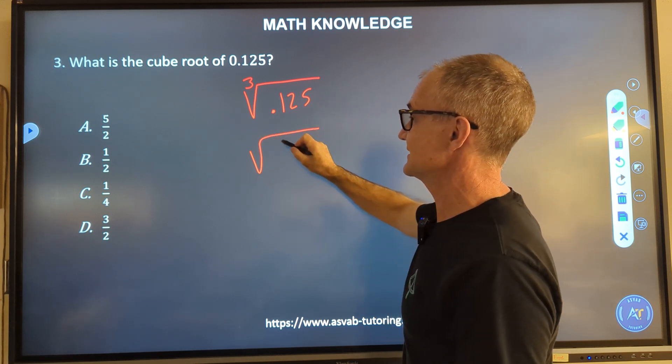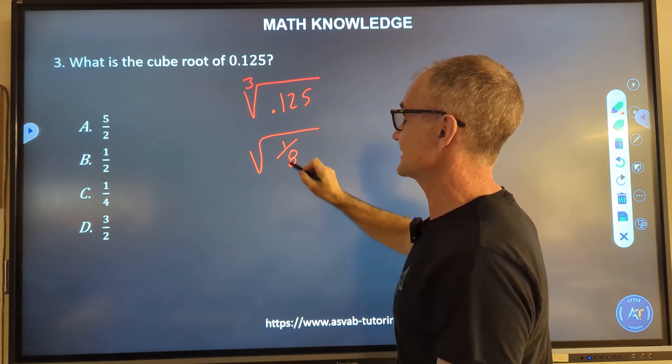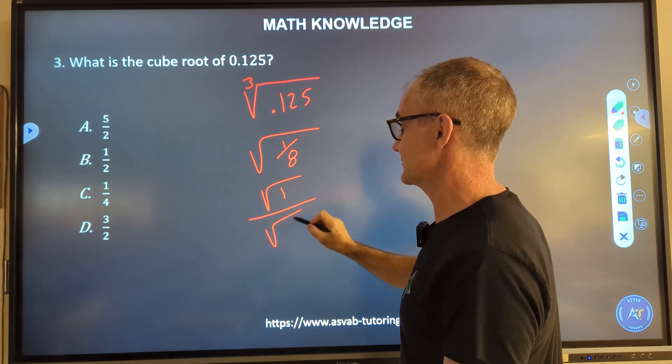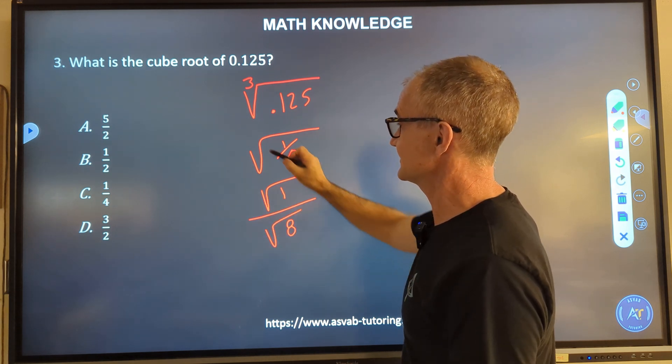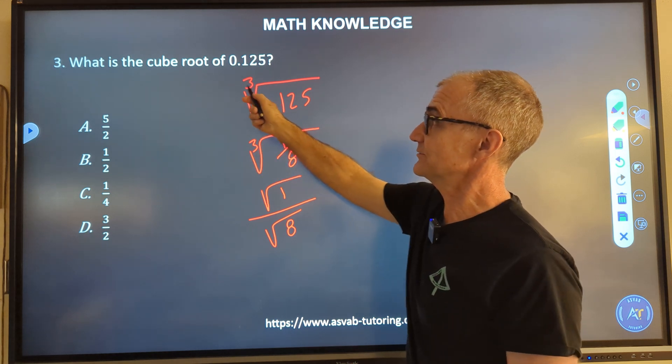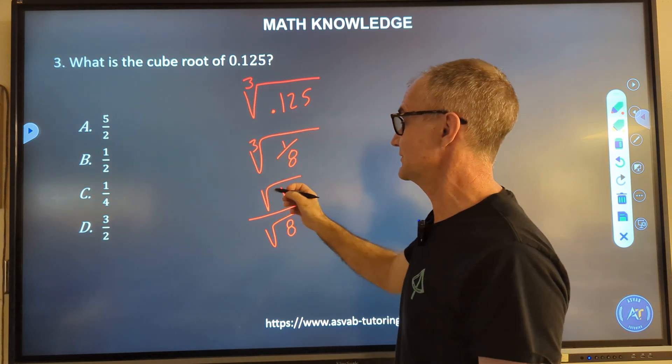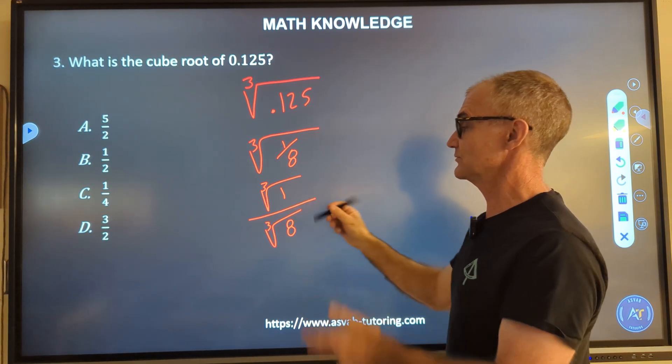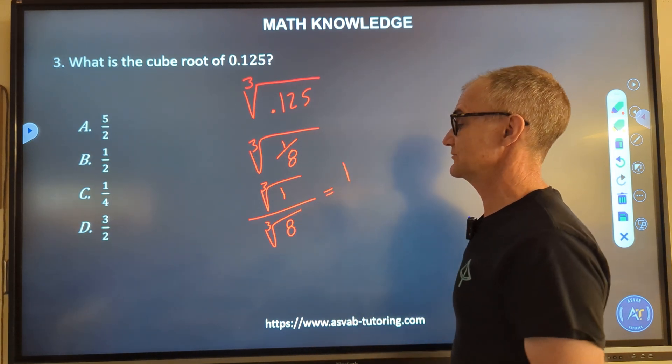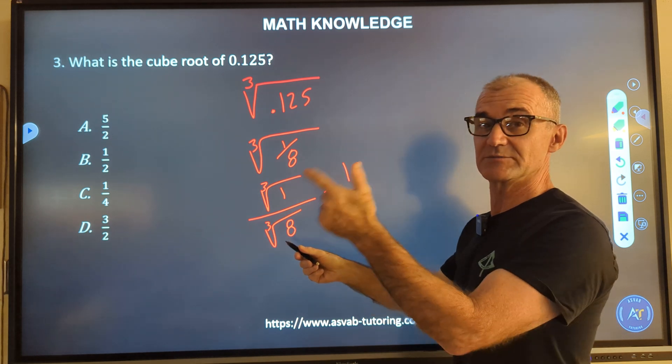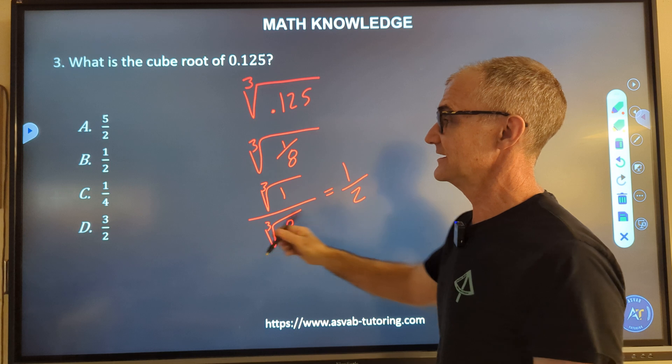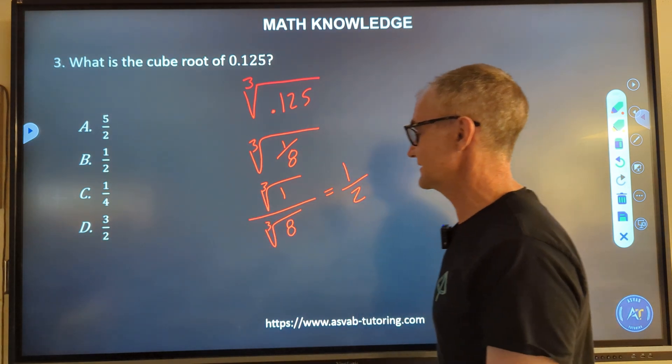I look at my answers. They're all fractional. If you see .125 is an eighth, then this is a lot easier. So I can see this is one eighth. I can split that into the cube root of one over the cube root of eight. Well, one times one times one is one. So the numerator here is one. Two times two, four times two, eight. This is a half, and my correct answer is B.